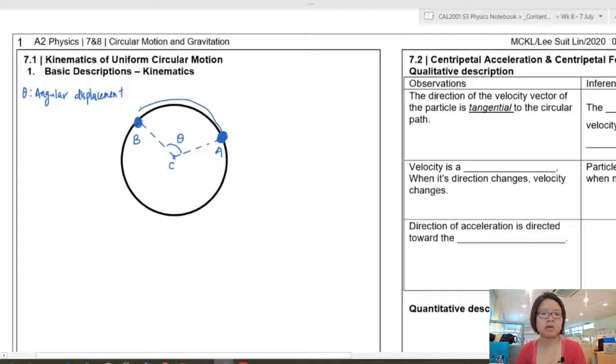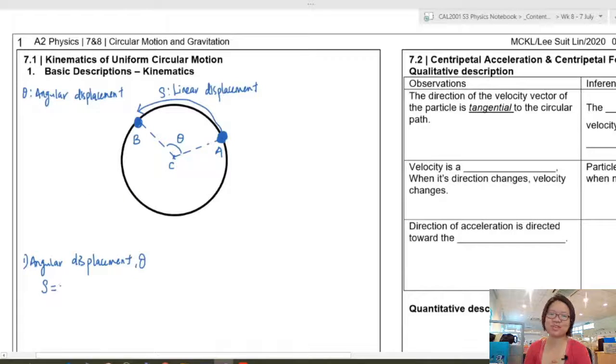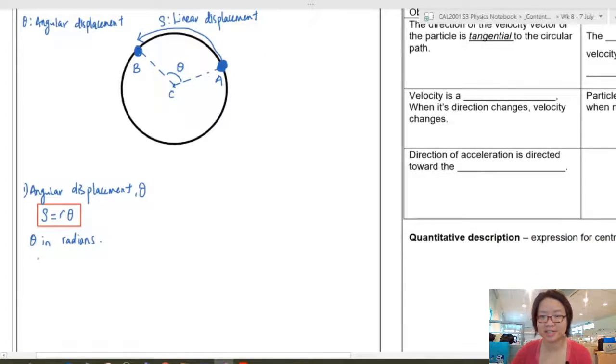Okay, so we have linear displacement which is the actual arc length and then there's also angular displacement which is the angle swept by a particle when traveling from A to B. So I'm pretty sure or at this I really hope that you know that the relationship between theta and S will be S is equal to R theta. R here being the radius of the circular path. Okay, making sure that whenever you do this theta is in radians.